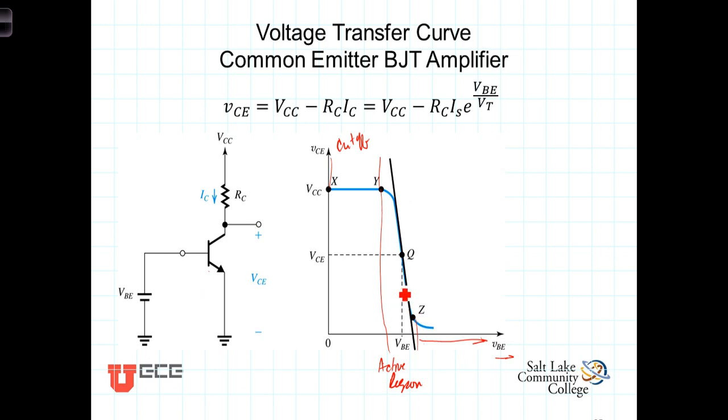We're going to choose some bias point, some quiescent point, that is located mid-region, somewhere mid-region of this active region. By doing so, that VBE establishes a corresponding biased VCE, and there's also a corresponding I sub C, which is the biased collector current going through the transistor.